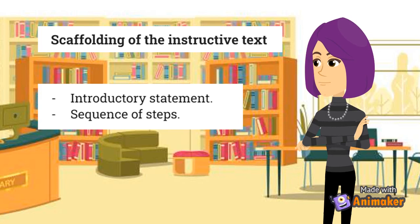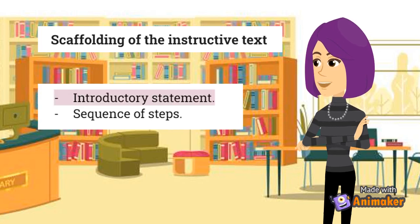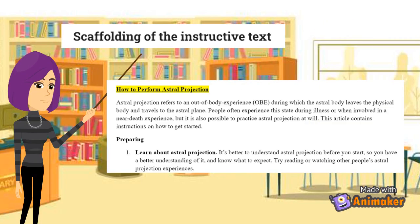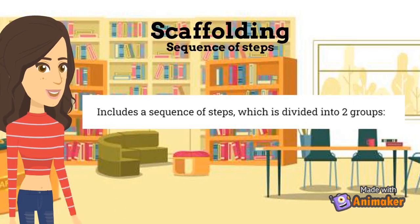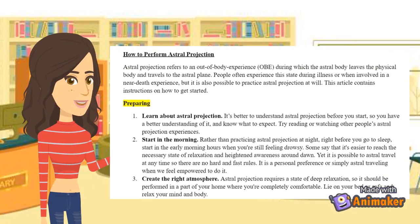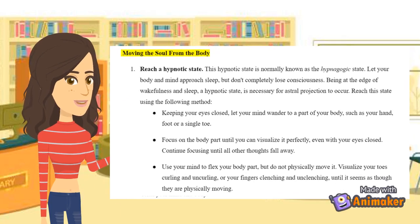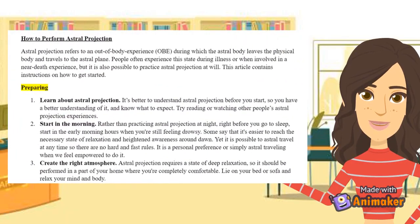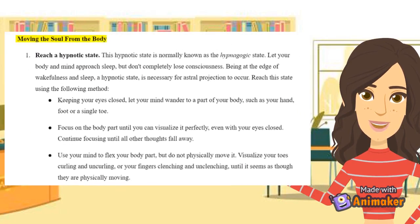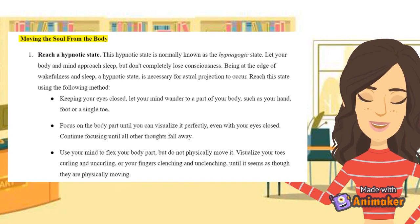Regarding the scaffolding, we can say that the text is made up of an introductory statement and a sequence of steps. We can find the introductory statement in the title, which mentions the goal, and we also have an introductory paragraph with a definition of astral projection and how it is usually done. The scaffolding also includes a sequence of steps divided into two groups: the first prepares the reader, and the second is about how to actually move the soul from the body. Each group contains steps to reach those objectives in order to succeed in the astral projection.